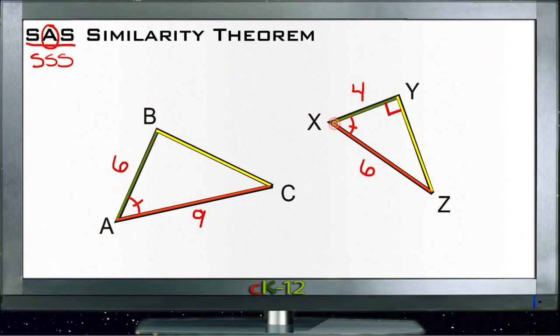And then the green side on the smaller triangle, XY, is four units, whereas the green side on the larger triangle, AB, is six units. So we know that the ratio between those two sides is four to six, which, of course, reduces to two to three.